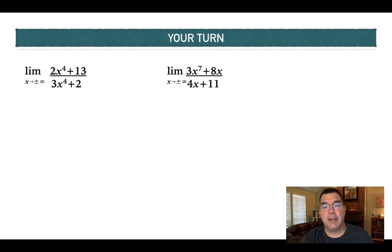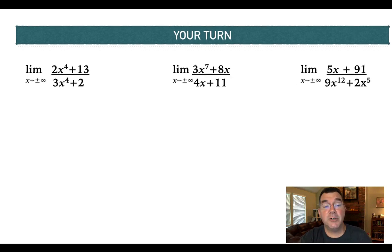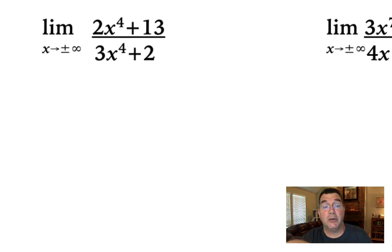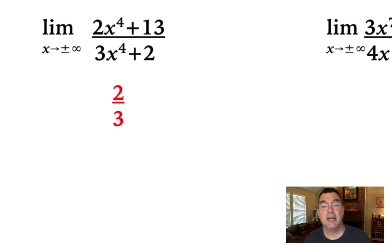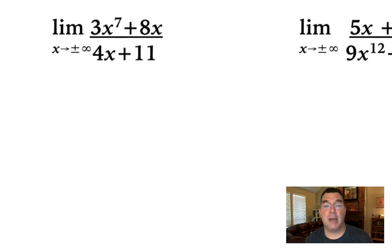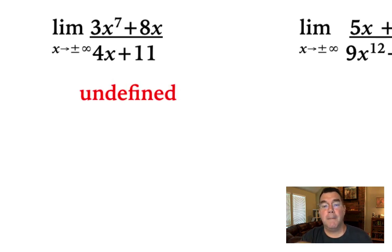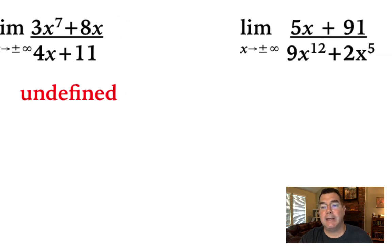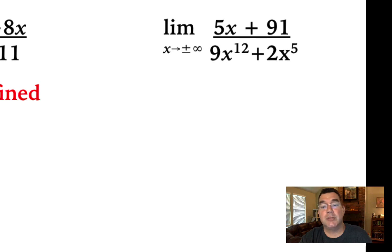Here are three more examples illustrating the rule about top-heavy, bottom-heavy, or equal degrees. In the first fraction, the degree of the numerator and denominator are the same, so the graph approaches the ratio of their leading coefficients — 2 thirds. In the second, the numerator degree is larger — top-heavy — so the limit is undefined and goes off to infinity. In the last example, the numerator degree is smaller than the denominator — bottom-heavy — so the y values approach 0 as you go far left or far right.